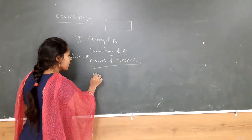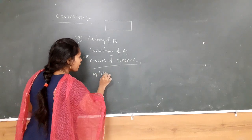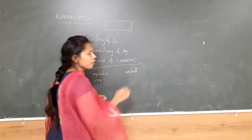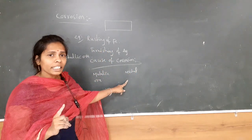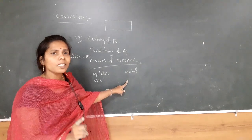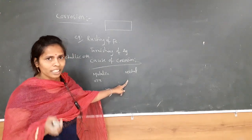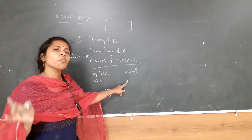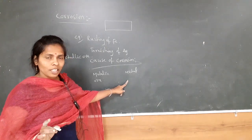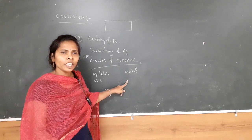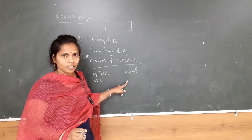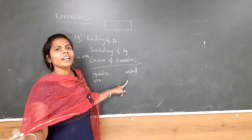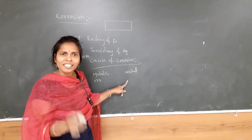When we get pure metal from metallic ore through metallurgy, we obtain something thermodynamically unstable — it is not stable and has more energy. Because it is unstable, it wants to become stable. So immediately it reacts with the environment.